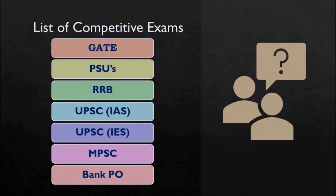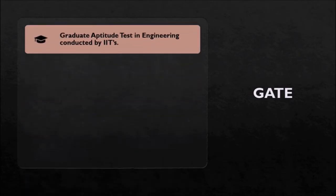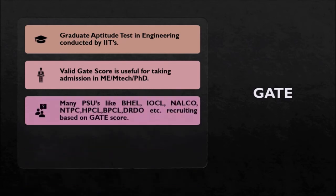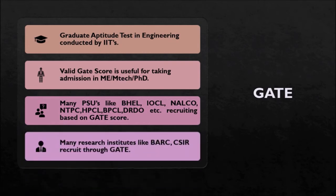The first exam is GATE — Graduate Aptitude Test in Engineering — conducted by IITs once a year. A valid GATE score is useful for admission to ME, M.Tech, and PhD programs. Many PSUs like BHEL, IOCL, NALCO, NTPC, HPCL, BPCL, and DRDO recruit based on valid GATE score. Research institutes like BARC and CSIR also recruit through GATE. The GATE score is valid for three years.